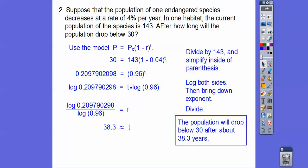So the population will drop below 30 after about 38.3 years because it drops 4% a year.